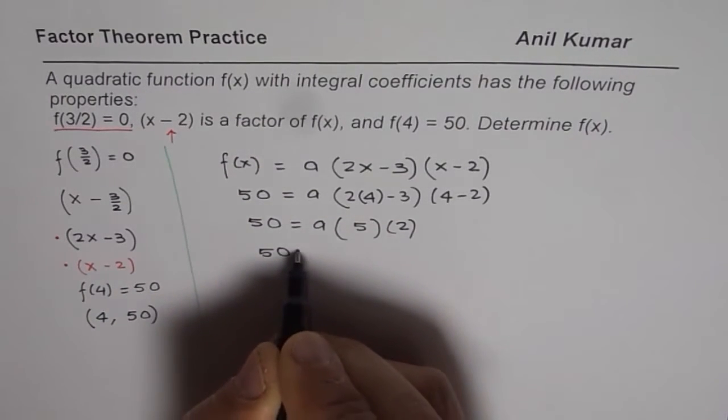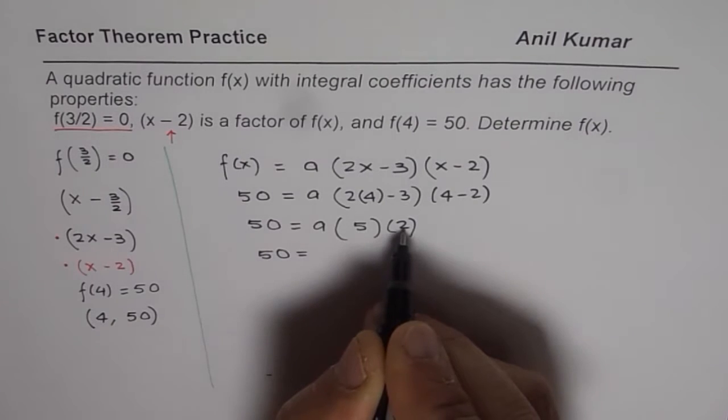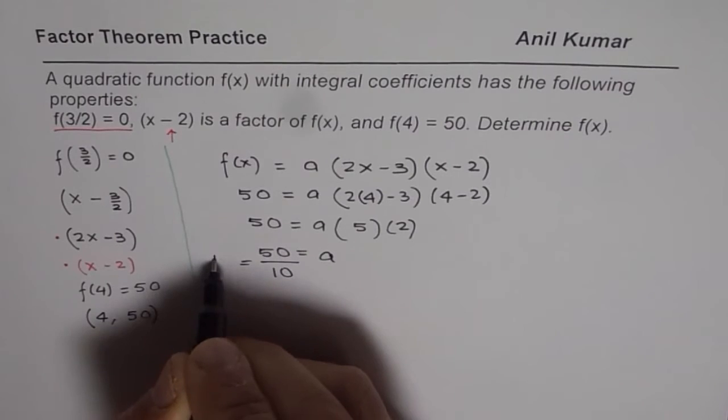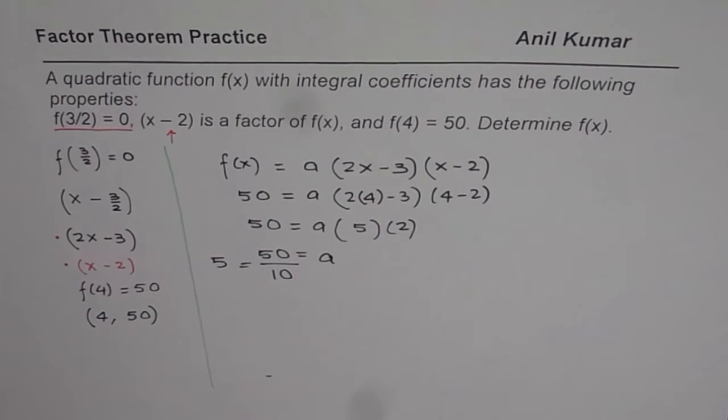So we have 50 equals to 5 times 2 is 10. We can divide this by 10 to get the value of a. So we get the value of a as 5. Got the point?